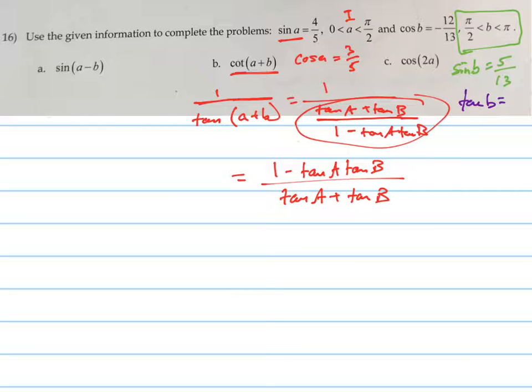It's opposite over adjacent. Remember my picture? Here was B right here. And the cosine is negative 12 over 13, so that's 13 and that's negative 12, so this is 5. So what's the tangent of B? 5, negative 5 over 12.